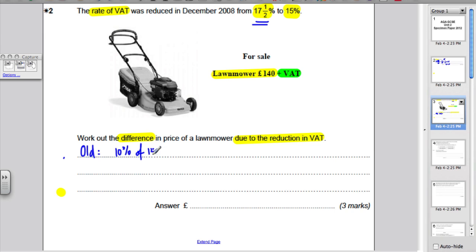Well, 10% of 140 is 14. So, 5% of 140 is half that, which is 7. And 2.5% of 140 is half 5%, which would be £3.50. So, in total, VAT must be £14 plus £7 plus £3.50, which adds up to £24.50. That would have been the old VAT. Well, what's the new VAT? The new VAT is 15%, which is 10%, which is 14, plus 5%, which is 7. And that adds up to £21.